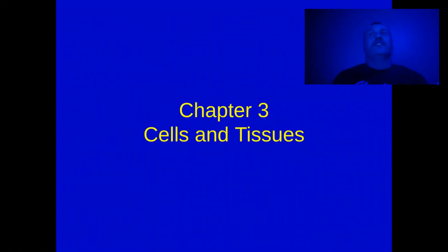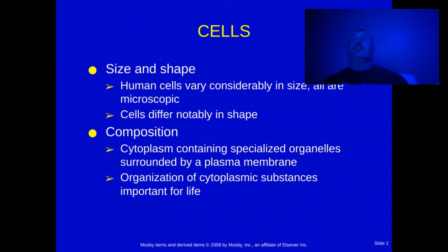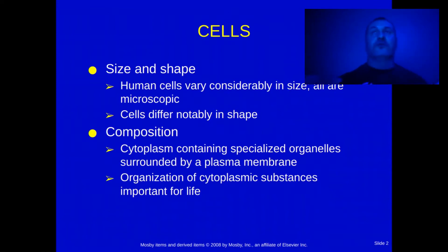Let's go ahead and get started on Chapter 3: Cells and Tissues. Cells are the smallest functional unit in the body, and there are trillions of cells in the body. Each cell turns over at least once every seven years — some a little faster, like skin cells, and some a little slower, like liver cells.